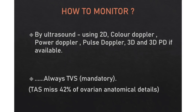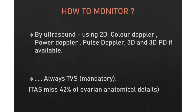Follicular monitoring is done by ultrasound using 2D color Doppler, power Doppler, pulse Doppler, 3D and 3D pulse Doppler, and power Doppler if available. It is always done with the help of transvaginal ultrasound because transabdominal ultrasound misses almost 42% of ovarian anatomical details.